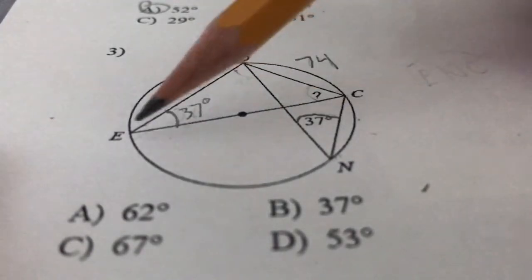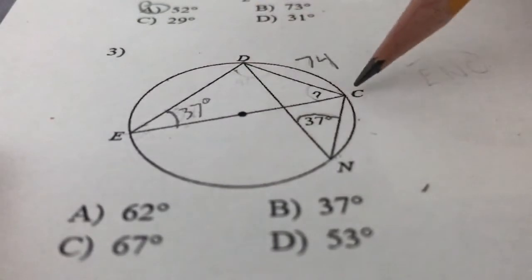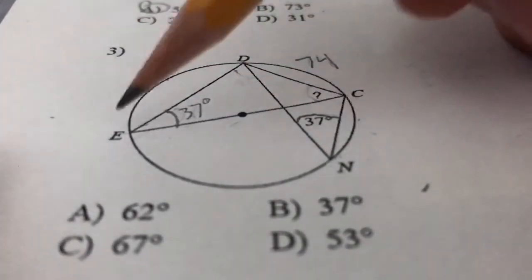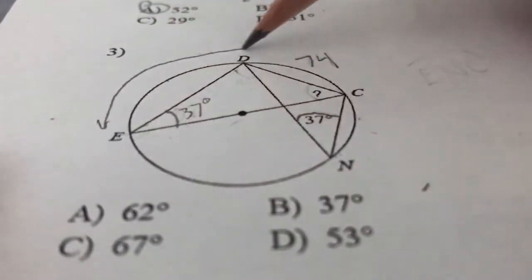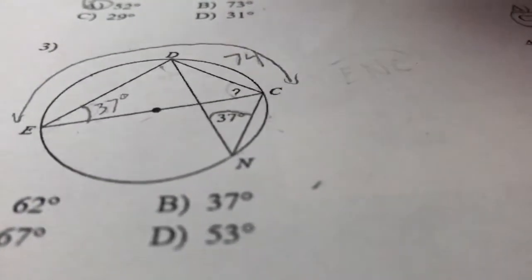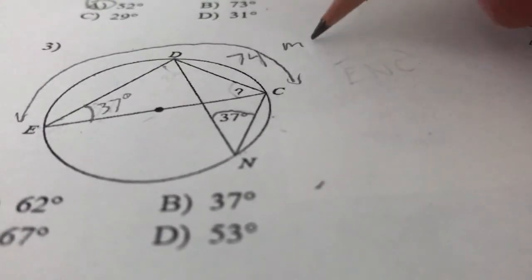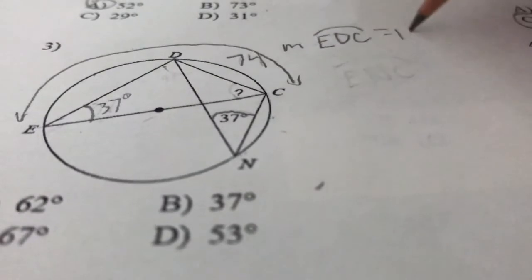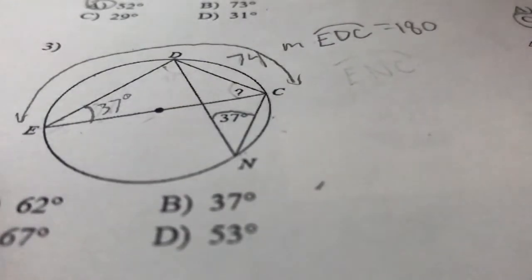What we do know is that EC is actually a diameter. So if that's a diameter, from here to here, we can actually say that the measure of arc EDC is equal to 180. And we can say that EDC is made up of ED and DC.